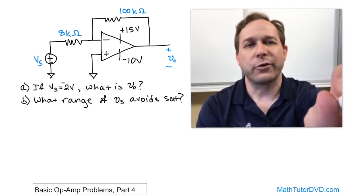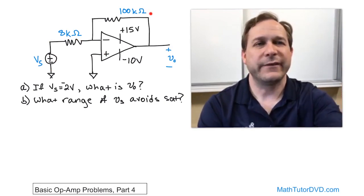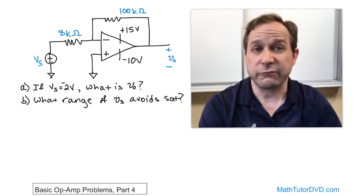On the inverting terminal, we're going through an eight-kilohm resistor to a voltage source, Vs. We have the feedback resistance that we usually have. In this case, it's 100 kilohms.